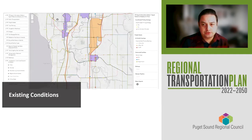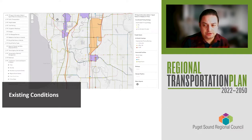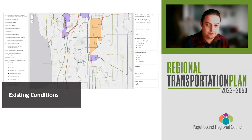The existing conditions portion of the tool highlights elements of the transportation system as they exist on the ground today, including transit service, bridge conditions, regional growth centers, and freight assets. Other datasets included in the tool are the results of large data collection efforts over the last few years, including a complete inventory of bicycle and pedestrian infrastructure on minor arterials and above, and ITS signal information for all signals located on the National Highway System. These layers and more can be viewed alongside demographic and contextual layers such as people with low incomes or people of color.